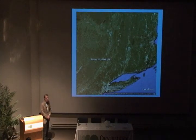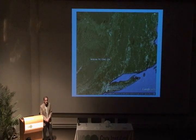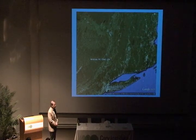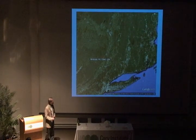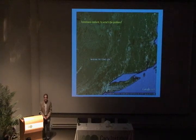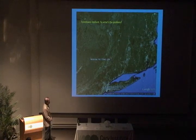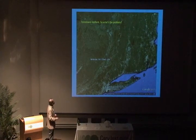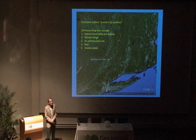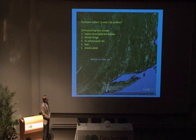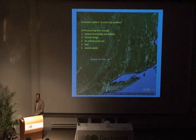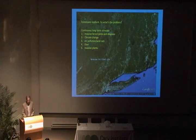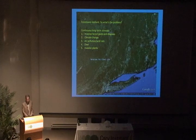This forest has come back from a situation, as Charlie described, that was nearly totally deforested 100 years ago. What we can say is that forests are resilient. So what's the problem? We know that we really took these forests away 100 years ago, and now they're back. Well, the problem is the number of continuous long-term stresses that are affecting the forests, and they all interact with one another, leading to an unpredictable future.